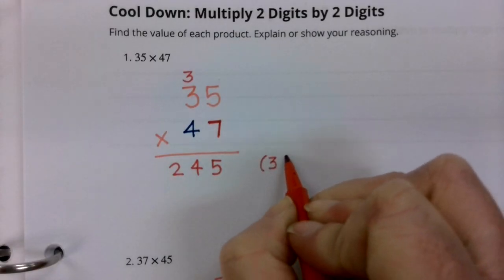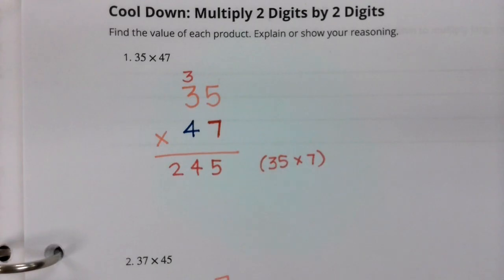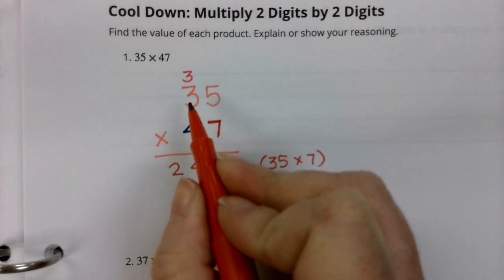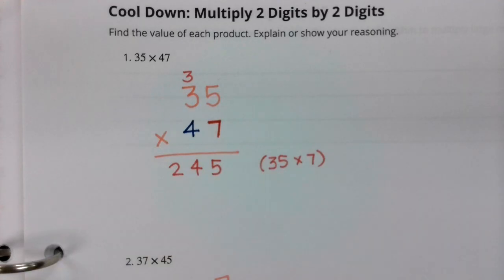And remember, boys and girls, this really is the answer to 35 times seven, right? Now we're going to go ahead and do 35 times four. But this four really has a value of 40. This four is in the tens place.